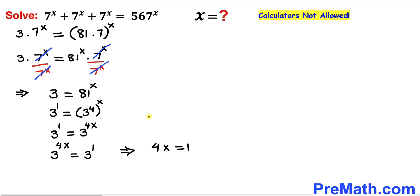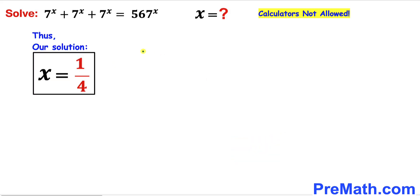Now we are going to isolate x by dividing both sides by 4. The 4s cancel, so therefore our solution x value turns out to be 1 divided by 4. So after all the calculations and manipulations, our final answer is x equals 1 over 4. Thanks for watching and please don't forget to subscribe to my channel for more exciting videos.